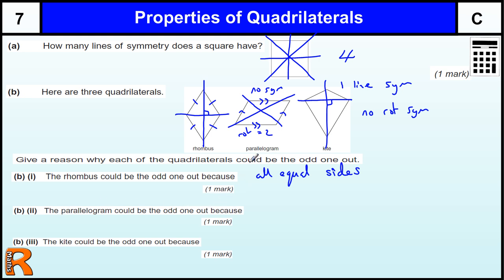Parallelogram could be the odd one out. Well, the parallelogram, these two have diagonals cross at right angles. This one doesn't. So diagonals don't cross at right angles.